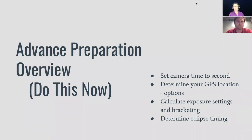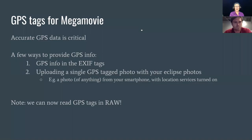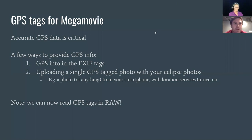You will want to be able to set your time to the second — the time in your camera needs to be set exactly. Time.gov is a great resource for that. You're also going to want to determine the eclipse timing. GPS is a critical part of how we align all of our images and get them in the right order, so we need accurate GPS data to make sure we're getting all images aligned for Mega Movie quickly.